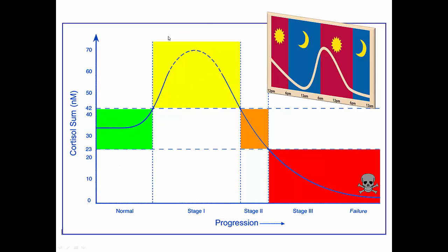When we go into stage one, our cortisol is hyper — jumping off the high end. Then we're coming down from that in stage two. The difference between stage two and normal is the rhythm. We can be in stage two with highs and lows that average out to normal, whereas in normal we have that nice gentle taper. With stage three, we're dropping beneath that 23-unit cortisol marker. That's what delineates stage two from stage three.